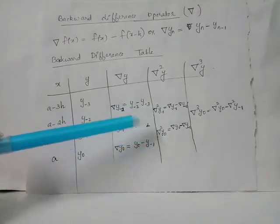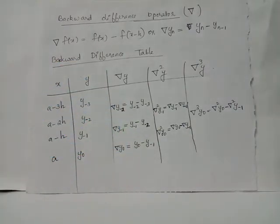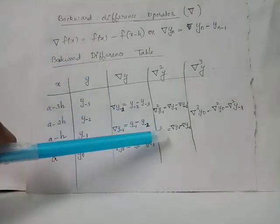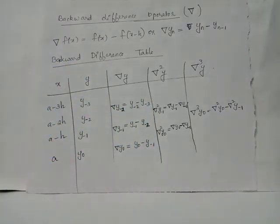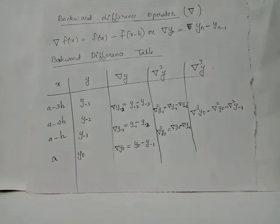These second backward difference values are written midway between their respective pairs. The third backward difference is del cubed y_0, which equals del squared y_0 minus del squared y_{-1}, written midway between those two values. We can now complete the backward difference table. Here, y_0, del y_0, del squared y_0, and del cubed y_0 are the leading backward differences, because a is the leading entry.